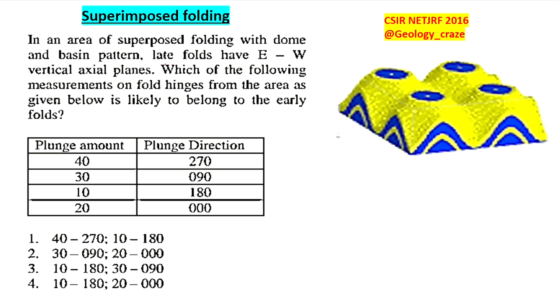In this question, it seems difficult with numbering and everything, but it is very simple. The question is: in an area of superimposed folding with dome and basin pattern, if you know which type of superimposed folding gives dome and basin you can answer. Late folds have east-west vertical axial planes.